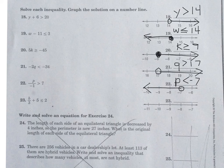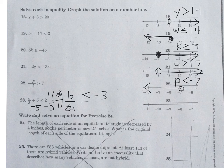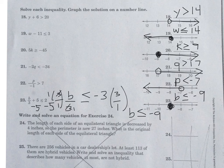Number 23 is a two-step inequality. First subtract 5 from each side, giving b over 3 less than or equal to negative 3. Then multiply by the reciprocal, 3 over 1, and b is less than or equal to negative 9. For the graph, draw a closed circle on negative 9 because of the equal-to, and point the arrow to the left toward the smaller numbers.